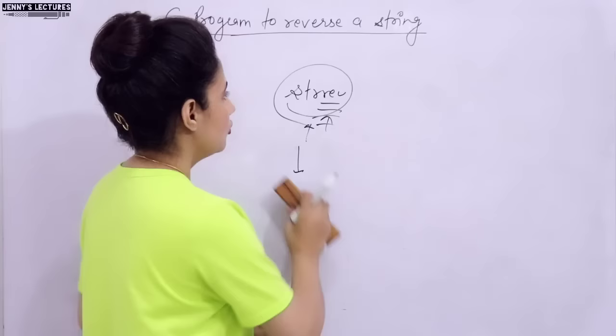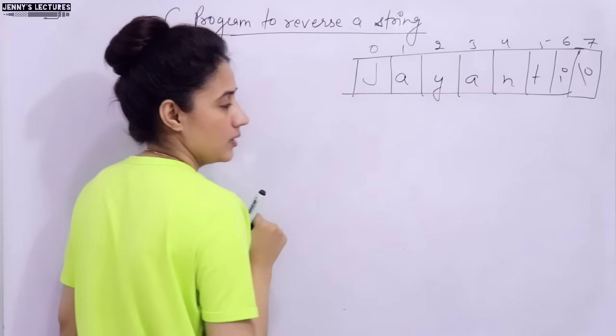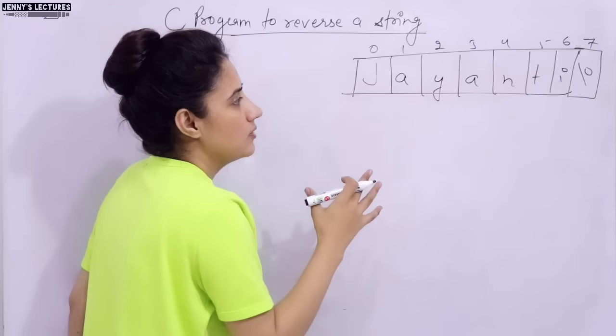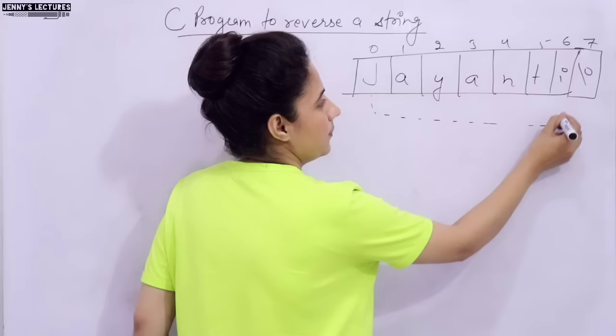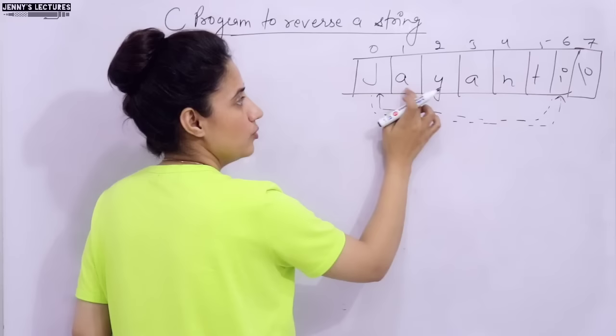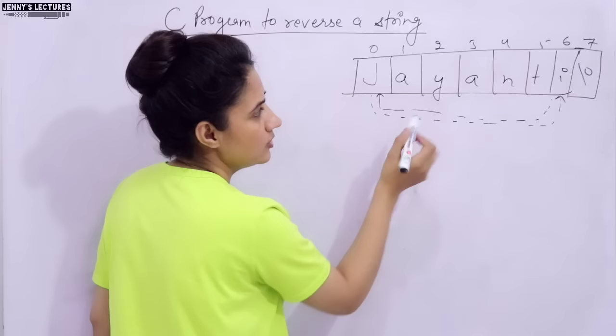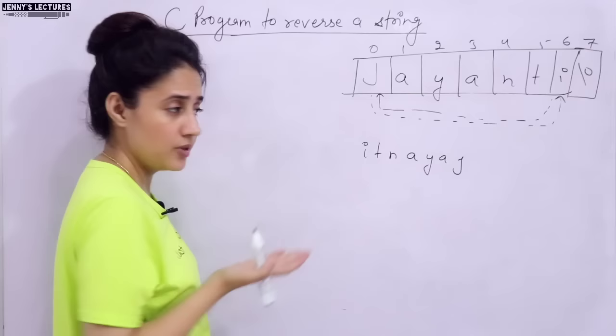What does reverse of a string mean? If a string is something like 'JAINTHI', the length is seven with a null character at last. Reverse means J should be where I is, and I should be where J is. Then A should swap with T, and Y would be reversed with N. The middle character A stays as it is. So the output after reversing would be: I, T, N, A, Y, A, J. That is what reverse of a string means.